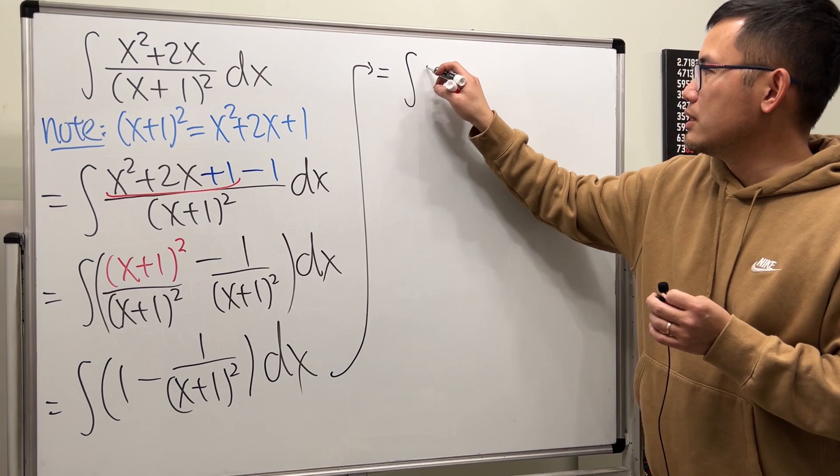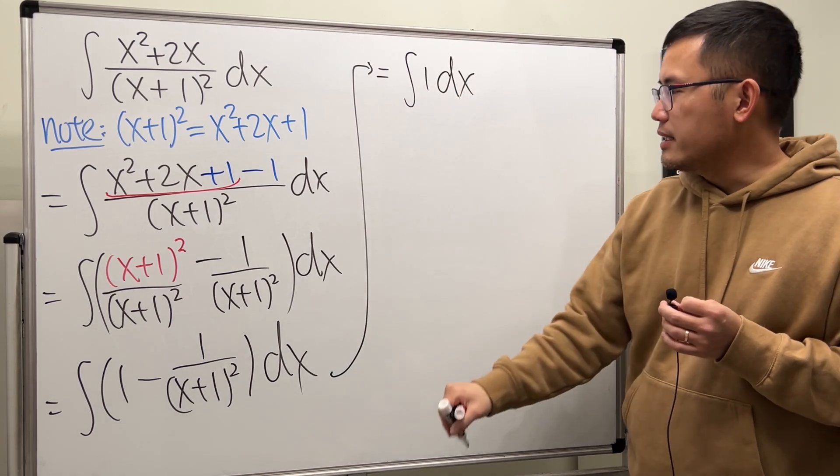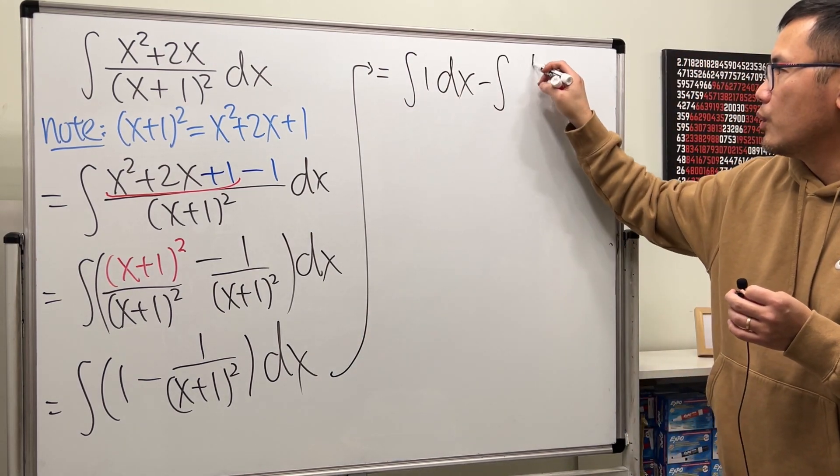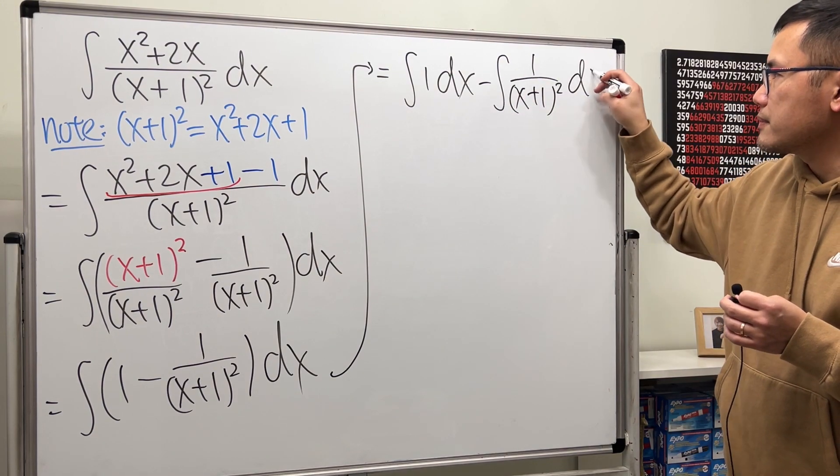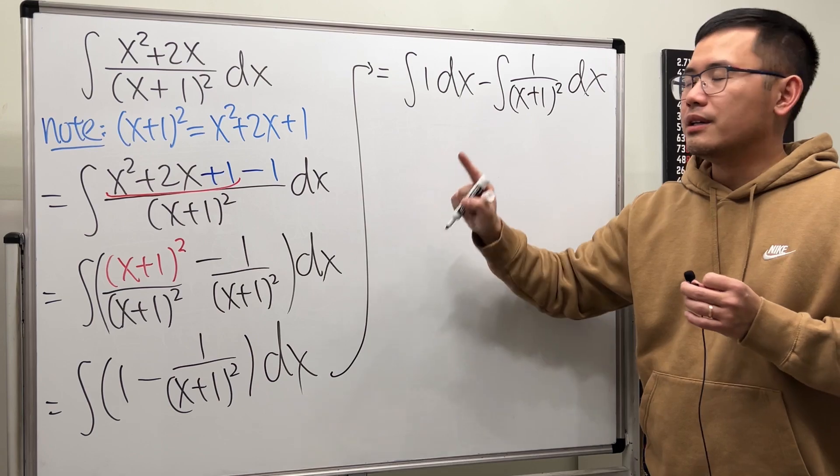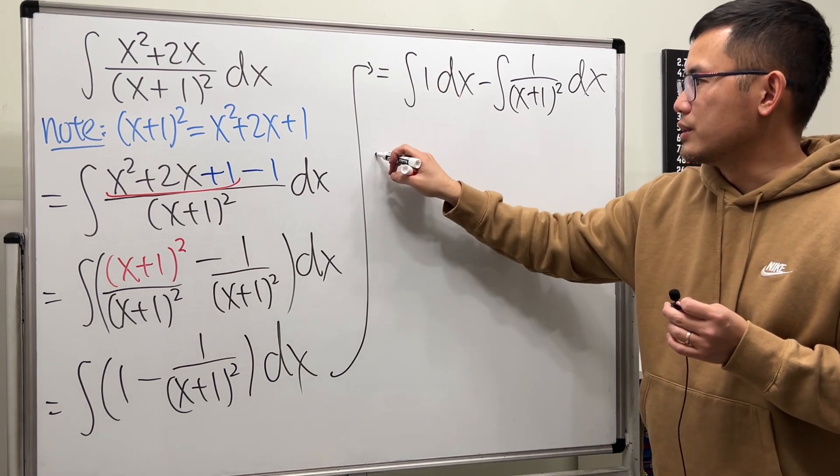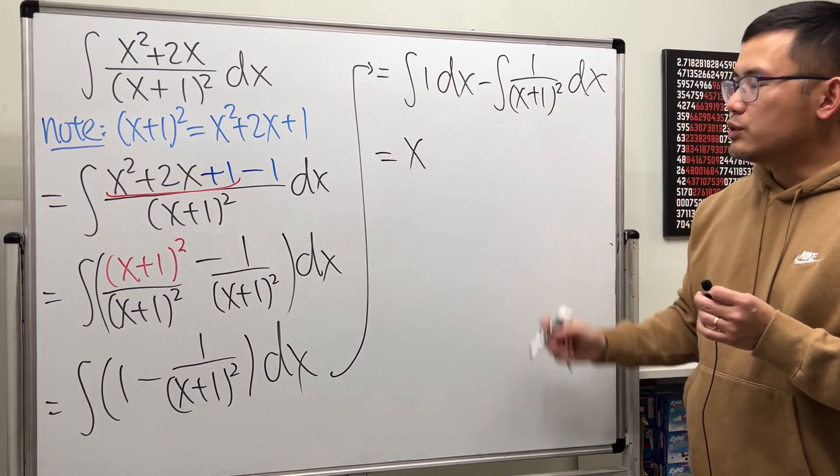Let's break them apart. We have the first integral, it's just integral 1. And then the second integral, we minus the integral 1 over x plus 1 squared. This is super easy. Integrating 1 in the x world is just x.